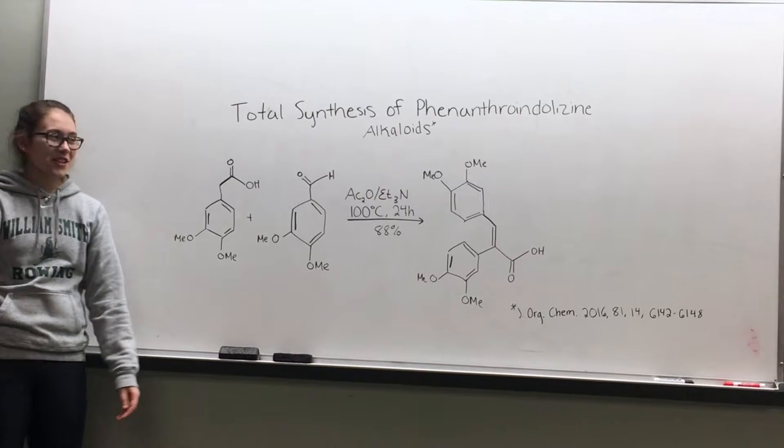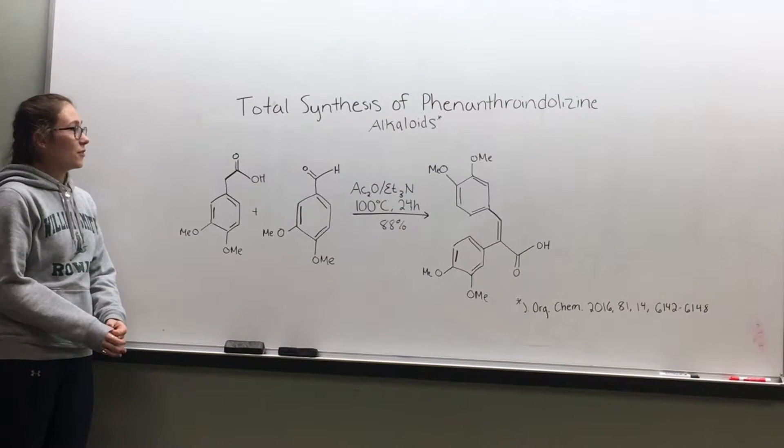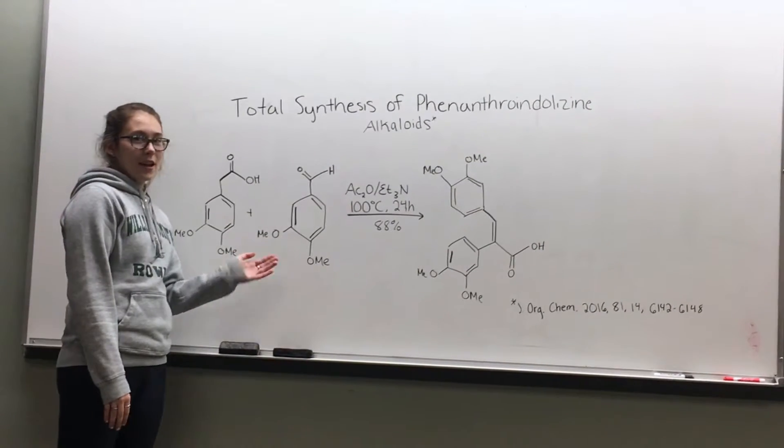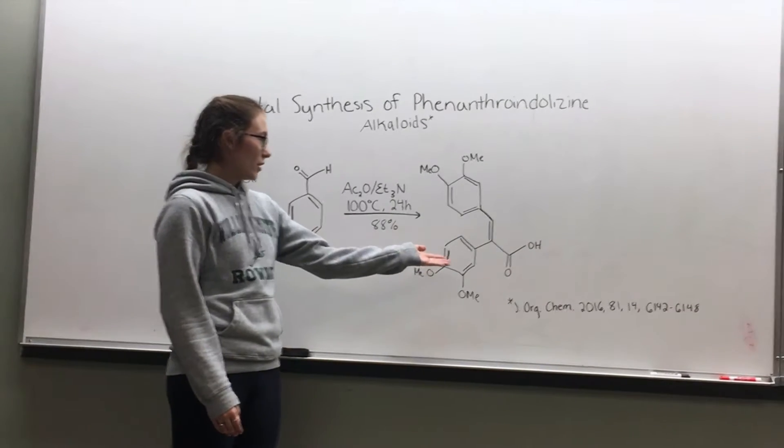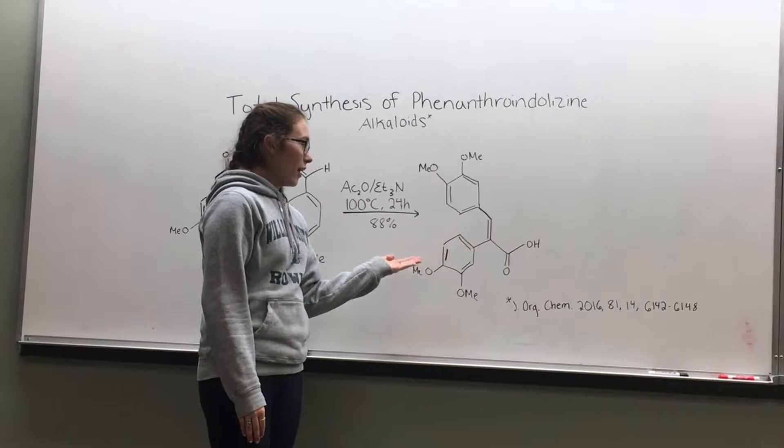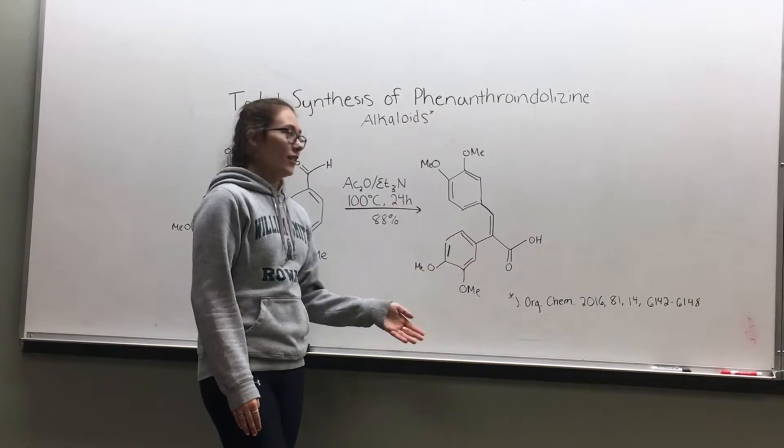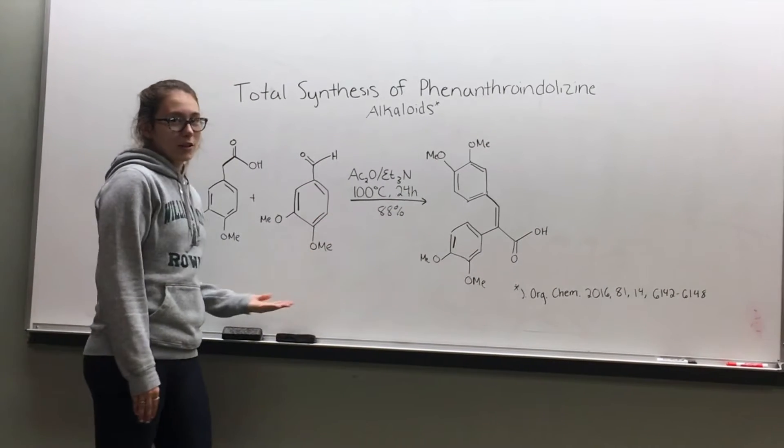In this literature example, we have the Perkin reaction as a step in the total synthesis of phenylporenyl-lyphine alkaloids. We see we have our aromatic aldehyde and our acid anhydride, and then we have our product here, including the alpha-beta unsaturated aromatic acid. And we see these more simple components in this more complex reaction.